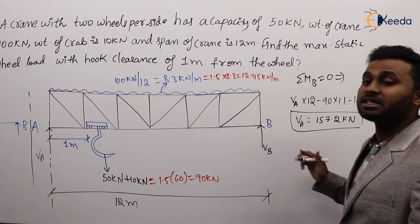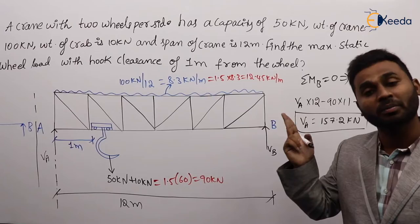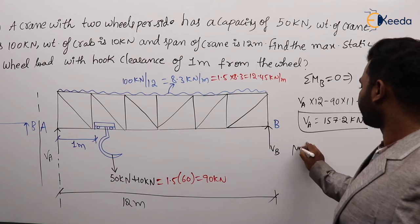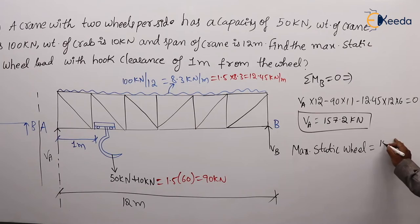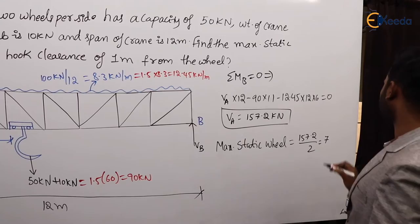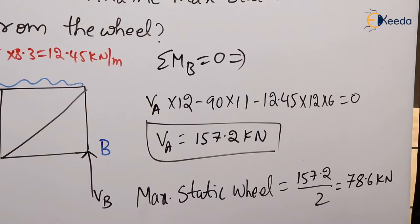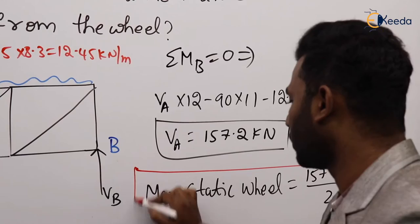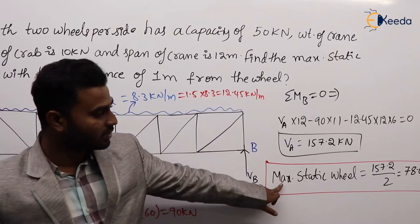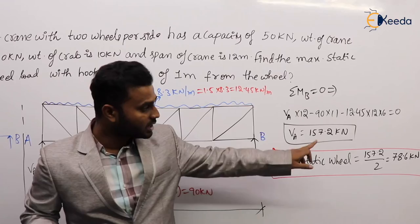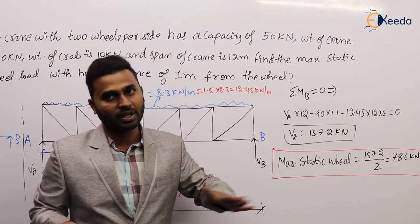At support A there exist two wheels. So the maximum static wheel load is 157.2 divided by 2, which equals 78.6 kilonewtons. This is the answer and the procedure for calculating maximum static wheel load. Additionally, for vertical load, if it is EOT the load should be increased by 25 percent, and for HOT it should be increased by 10 percent.